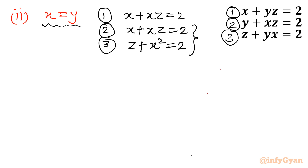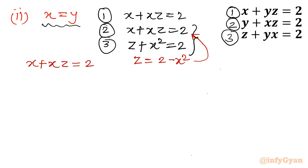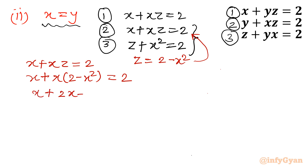I will substitute z equal to 2 minus x squared from the third equation into the first equation. Equation 1 was x plus xz equal to 2, so putting z equal to 2 minus x squared: x times 2 minus x squared equal to 2. Opening the bracket: 2x minus x cubed equal to 2. Taking all terms to one side: x cubed minus 3x plus 2 equal to 0.